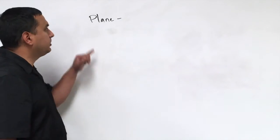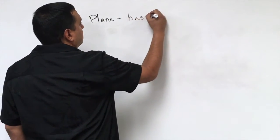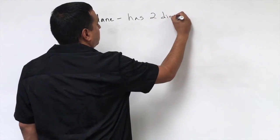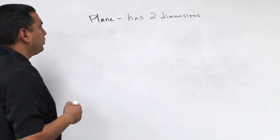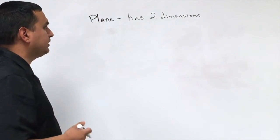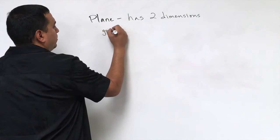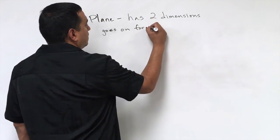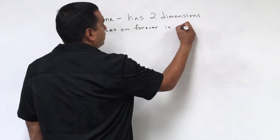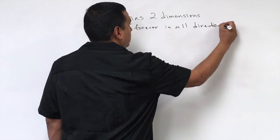The third undefined term is plane. Now a plane has two dimensions. Usually when we draw a plane, a plane, it goes on forever in all directions.